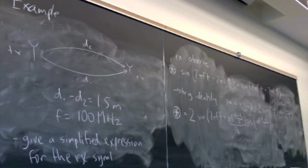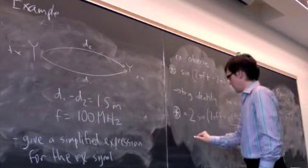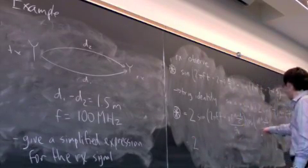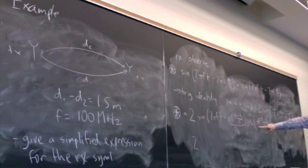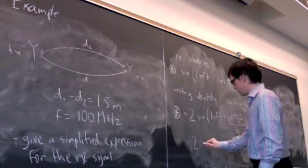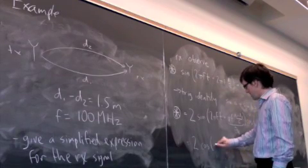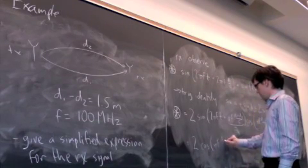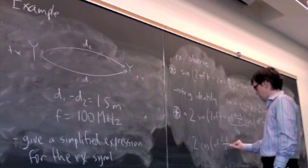So let's just simplify that a little more equals 2. This is now not a function of t anymore. So this is actually scaling the amplitude. So I'll pull that out front. 2 cos πf (d1 minus d2) over c.